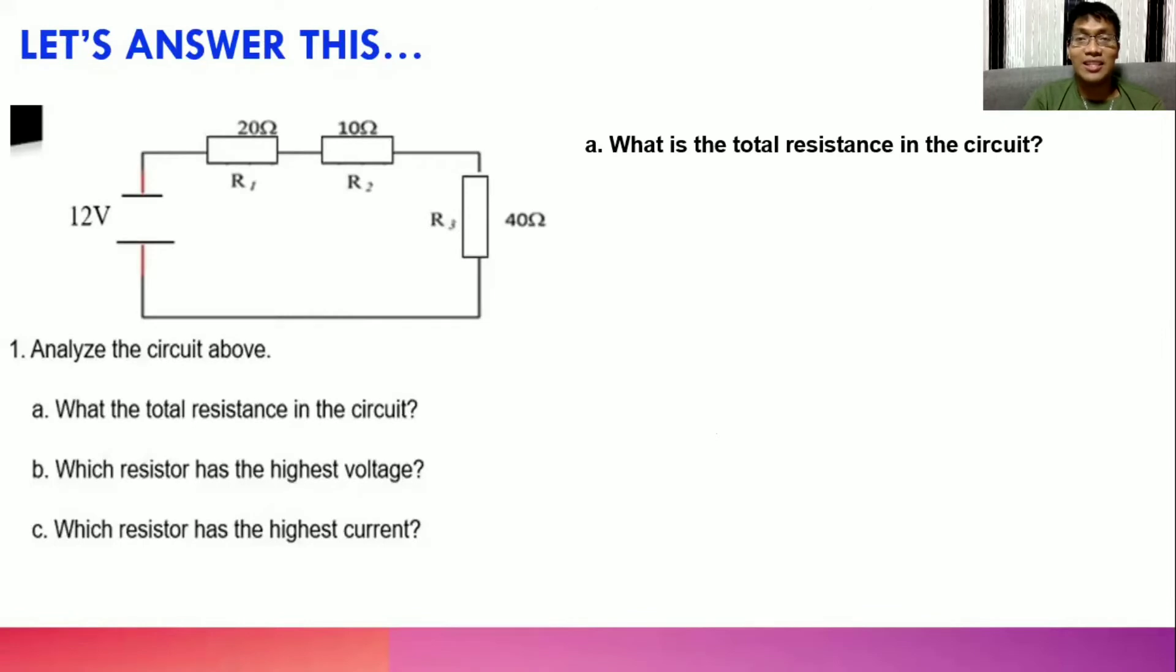What is the total resistance in the circuit? If you are asked to compute for the total resistance in a series connection, you just have to add them up. So we got 20 ohms plus 10 ohms plus 40 ohms is equal to, you got it right, 70 ohms.